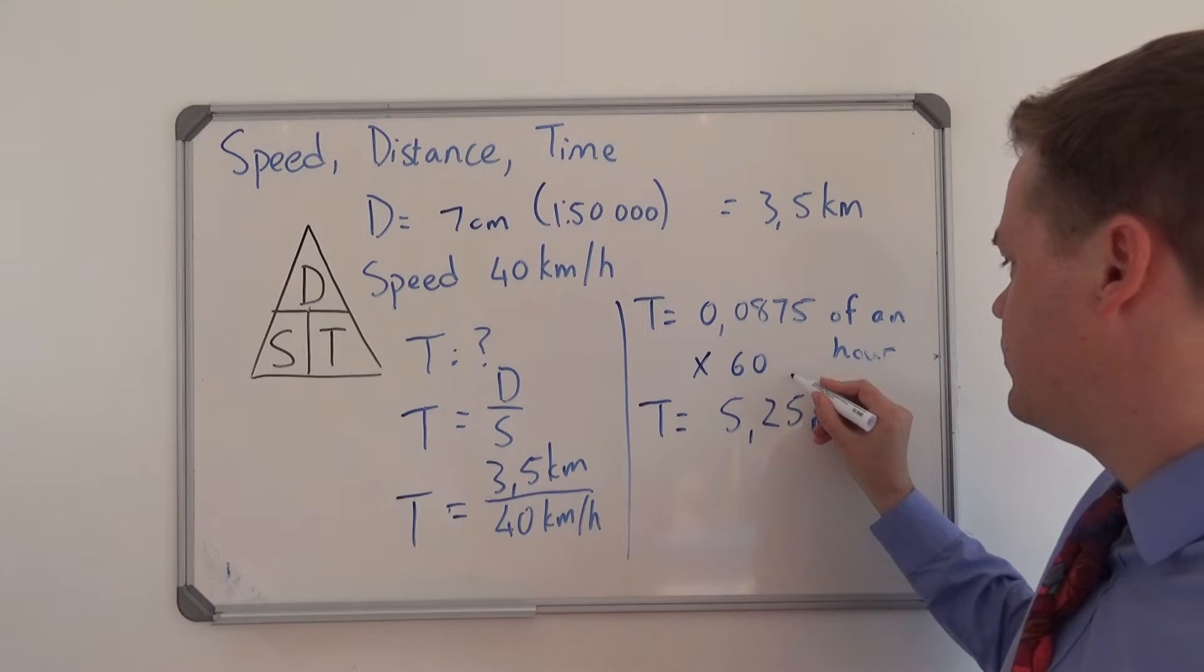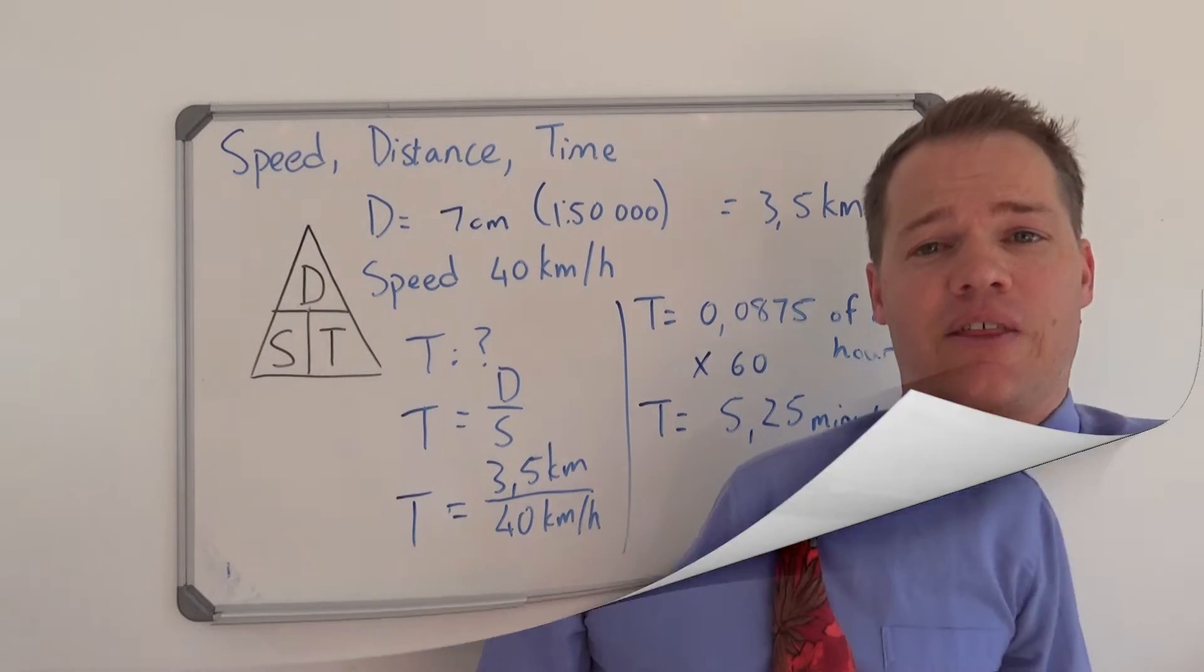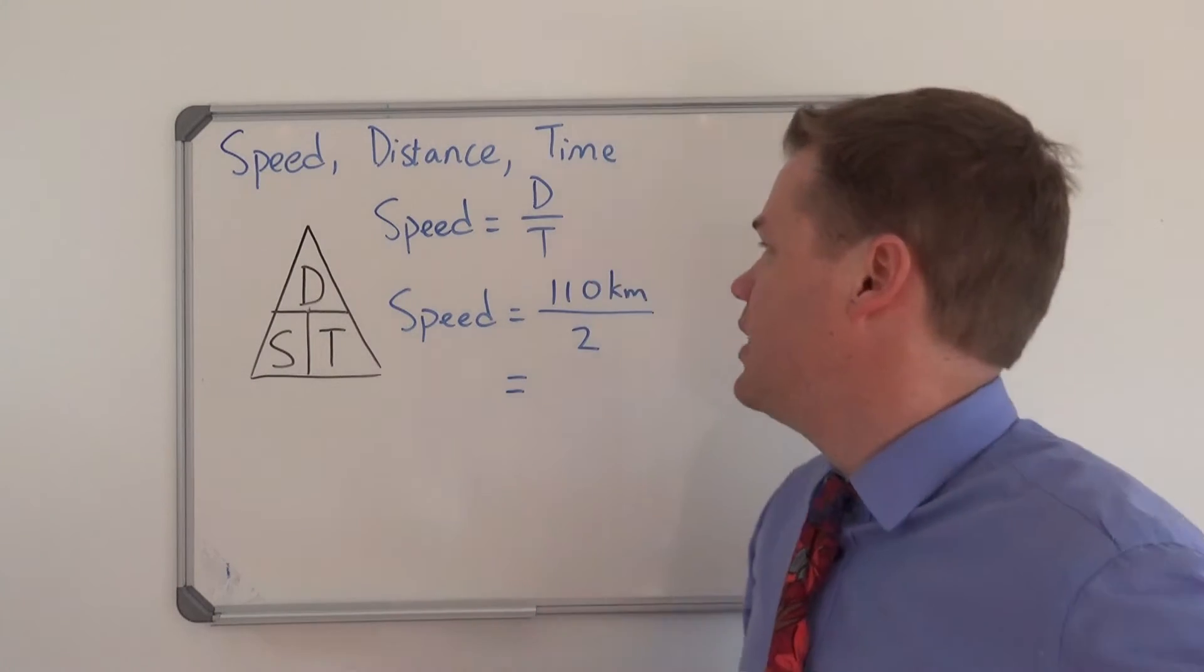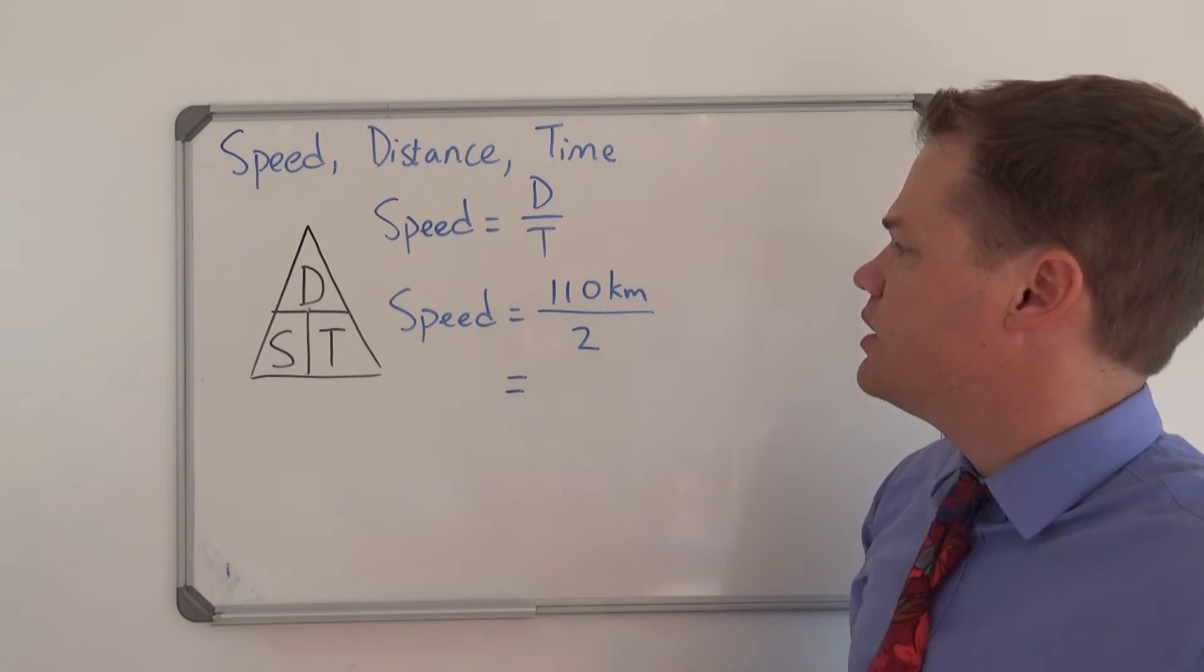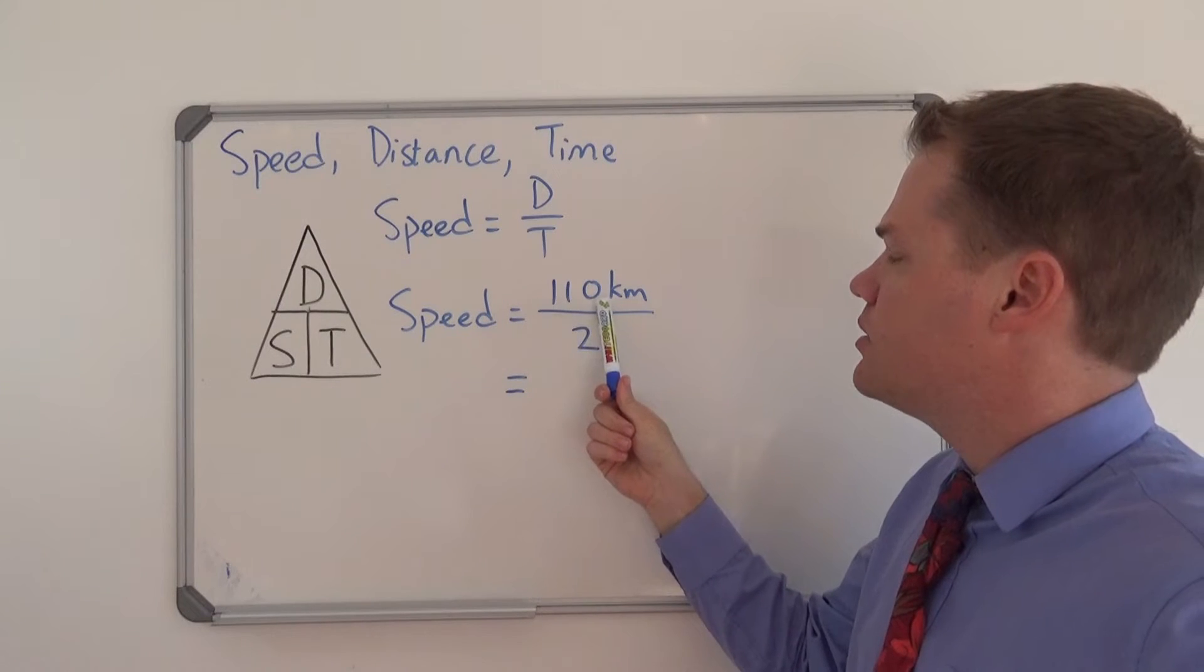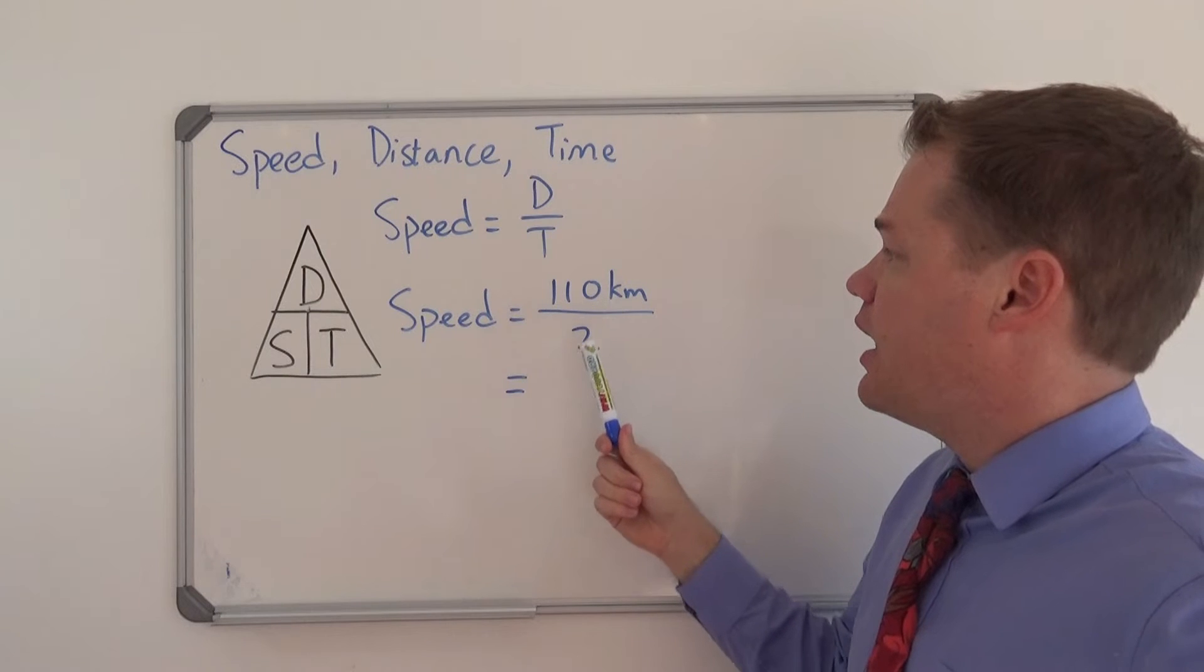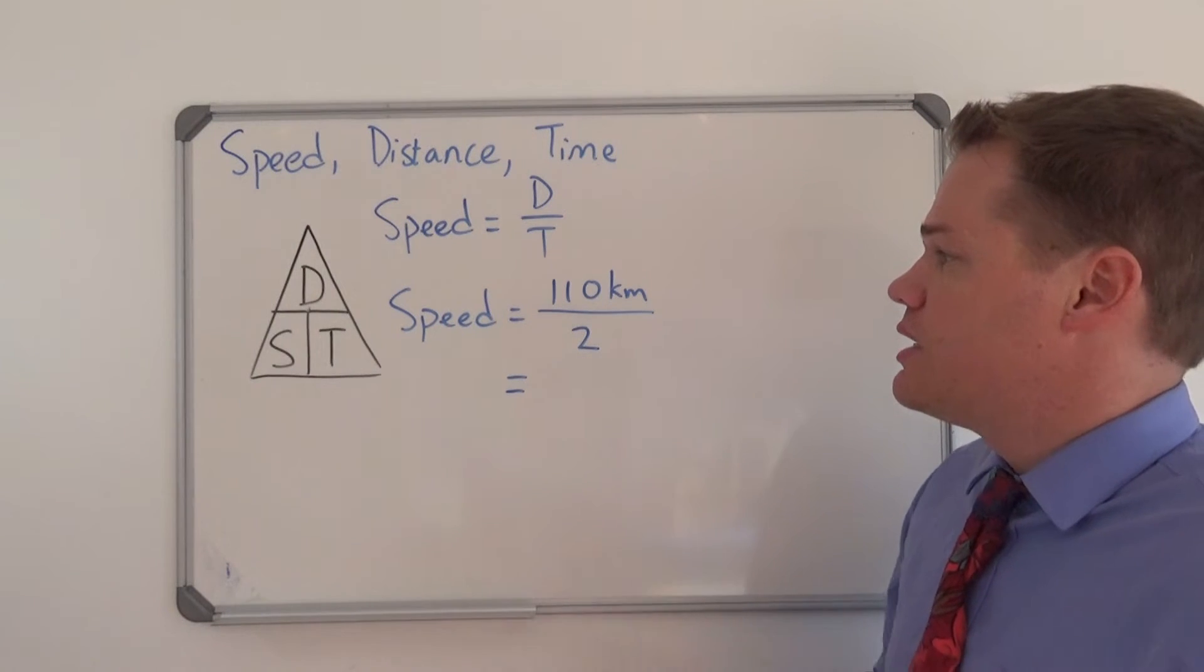So that's our first example. Let's do another one. So the next example is going to be very simple. What we have here is we want to calculate the speed if we are traveling for 110 kilometers and the time it takes is two hours. Very simple.